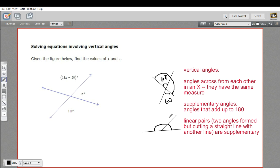They're supplementary. So if this is 60, then this will be 120. And because this angle here and this angle are another vertical angle, we can say that's 120 as well.